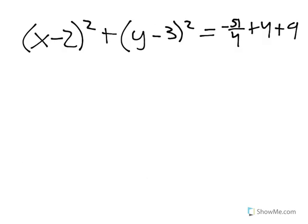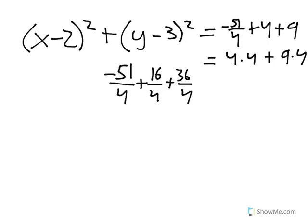First, we want to simplify the right side by using lowest common denominator. We can multiply the 4 and the 9 by 4 so we can get a common denominator which is over 4. Once you simplify the right side, it will equal 1 fourth.